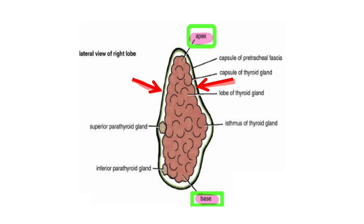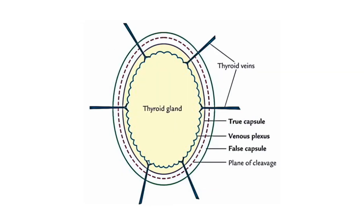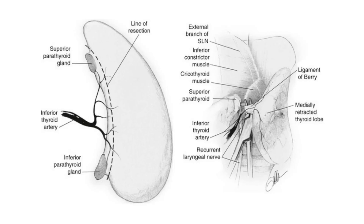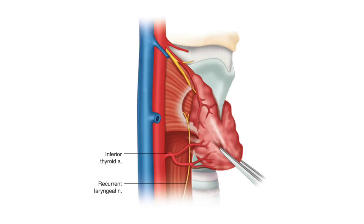The parathyroid glands are located between the true and false capsules. The surgical approach for thyroidectomy involves gently removing the false capsule and dissecting into the plane between the true and false capsules. This allows easy identification of the two parathyroid glands on the posterior medial edge of the thyroid gland, preserving their blood supply and identifying and preserving the recurrent laryngeal nerves.